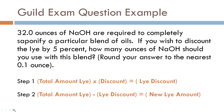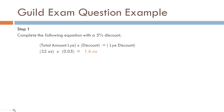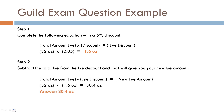I also want to go over one of the guild exam questions for those who want to do the certification the guild offers — you will see a question like this: '32 ounces of sodium hydroxide are required to completely saponify a particular blend of oils. If you wish to discount the lye by five percent, how many ounces of sodium hydroxide should you use with this blend?' Just apply the two formulas: 32 ounces times 0.05 equals 1.6 ounces. Then 32 ounces minus 1.6 ounces gives you 30.4 ounces. That's your new lye amount with a five percent discount.